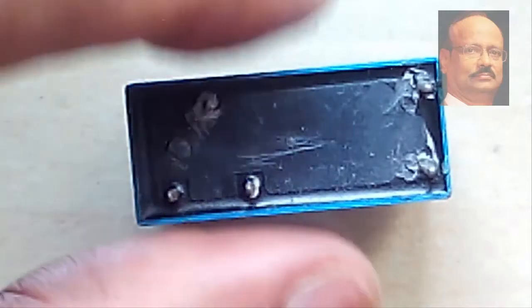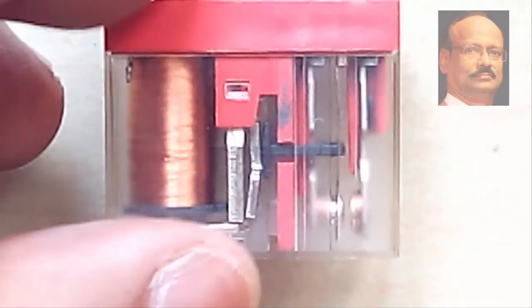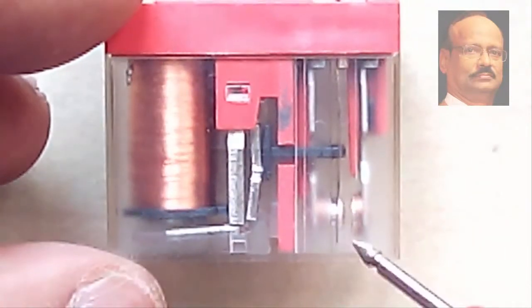You can always even look through certain relays. There are certain relays which are quite transparent, like this relay. It is transparent, and you can see the contacts are visible here.